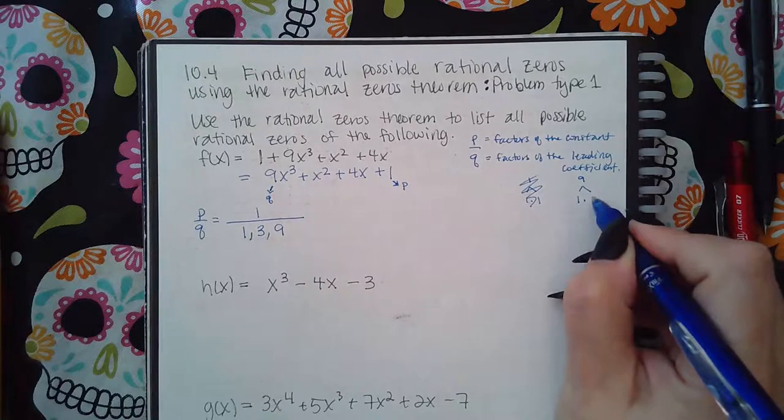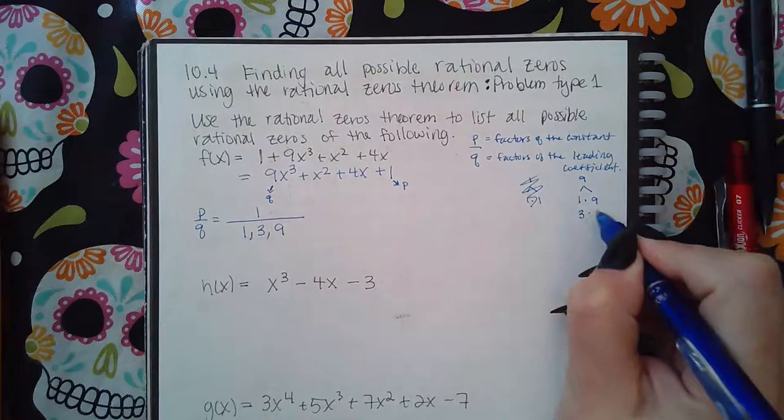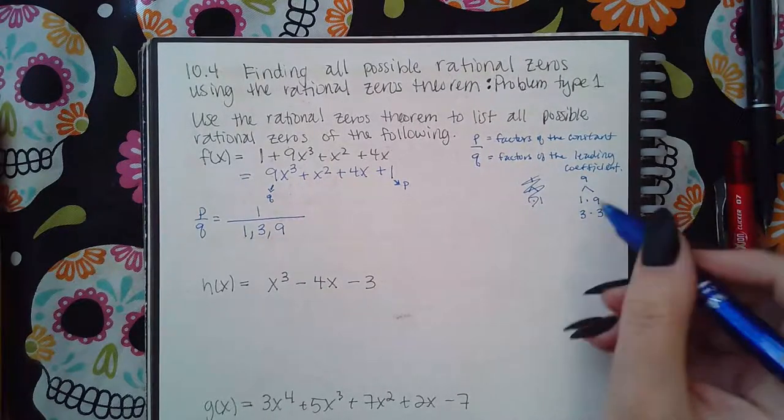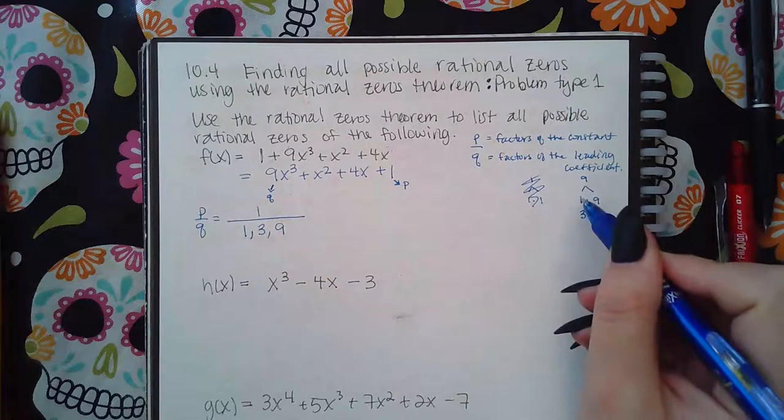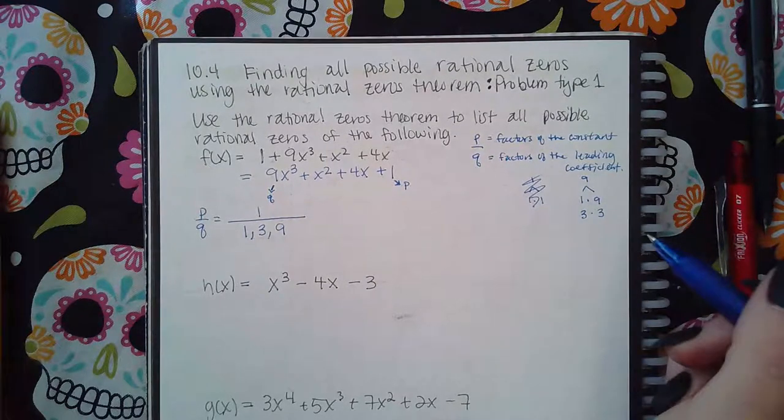For 9, we have 1 times 9, and then we have 3 times 3. So I have the different numbers of 1, 3, and 9. You don't need to repeat any number twice.